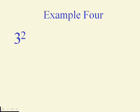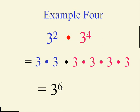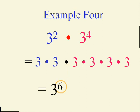How about multiplying three to the second power times three to the fourth power? Three to the second just means three times three — there are two of them. Three to the fourth means four of them. Altogether, isn't there six of them? We could go three times three six times and get 729. Note where that six came from: between two and four.